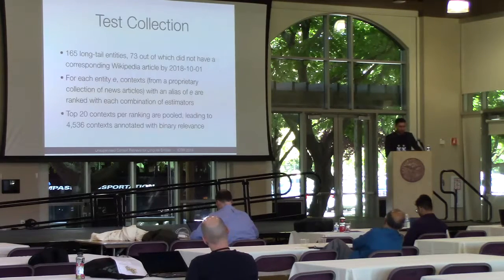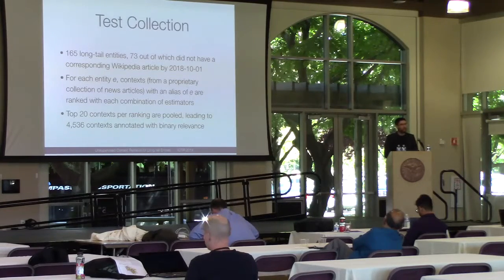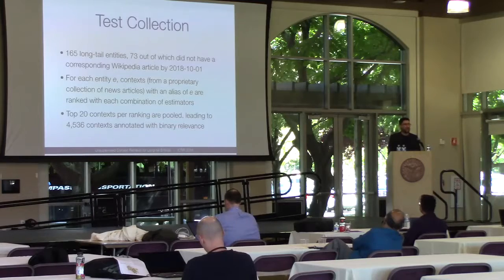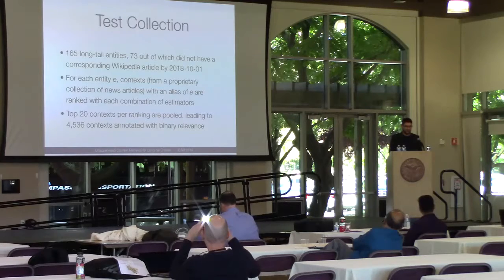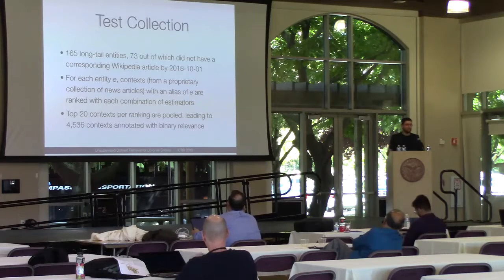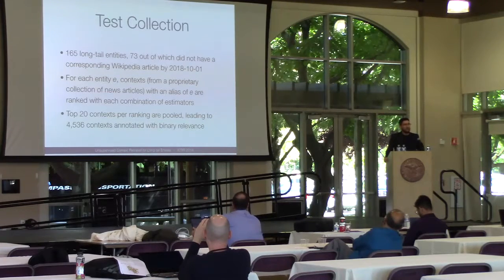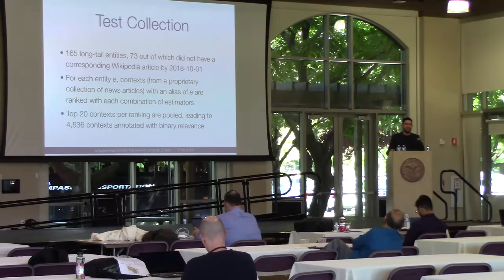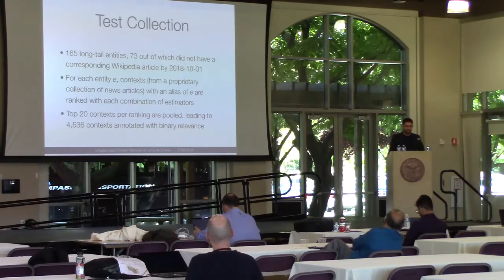One main contribution of this work is the test collection. These are actual entities that were of interest to the company — 165 entities in total, and 73 of them didn't have a Wikipedia page at the time of writing. For each entity, contexts are ranked using different methods and standard pooling techniques. Media experts who perform online reputation management tasks then look at each context and assign a binary label, indicating whether it is relevant to that entity or not.